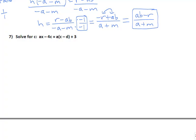Our last example. We want to solve for c. We've got a c on the left side and a c on the right side inside of those parentheses. So we have two c's, that means we're probably going to need to factor eventually. Before I do, I want to get at that c in those parentheses, so I'm going to distribute my a across. So the left side stays put, ax minus 4c. The right side becomes ac minus ad plus that three.